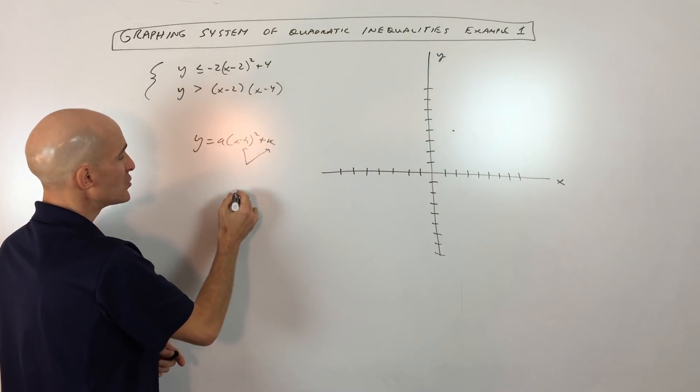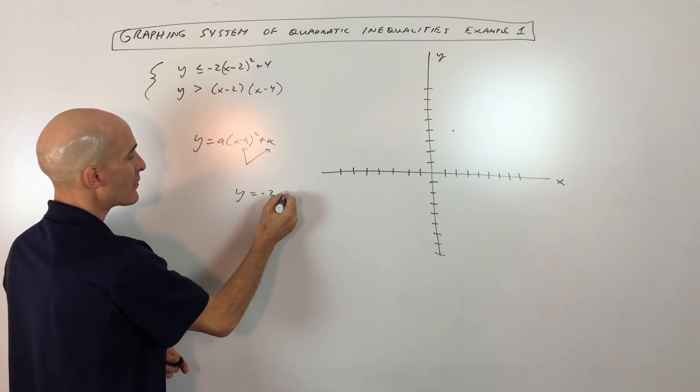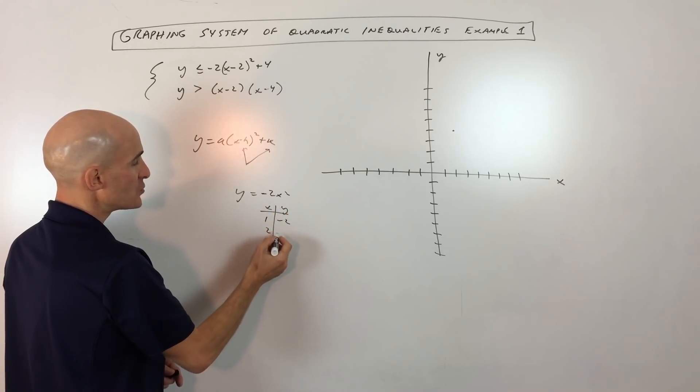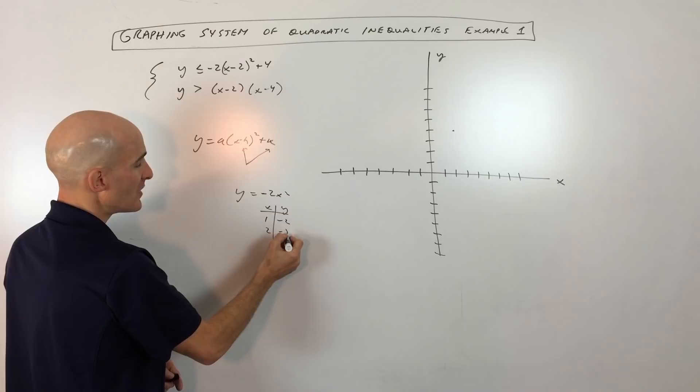And then the negative 2, what we can do is we can make a table just looking at the parent function, -2x². You can see that if x is 1, y is -2. If x is 2, that's going to be at -8.